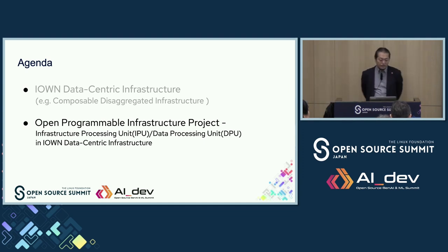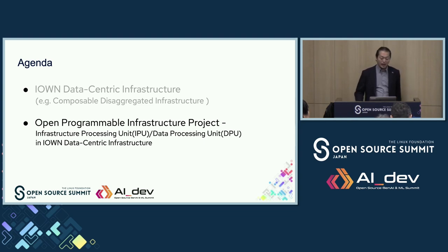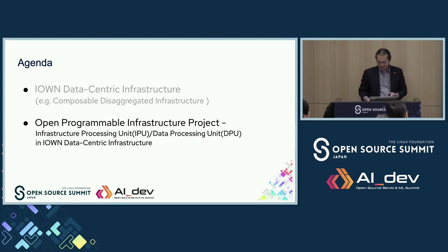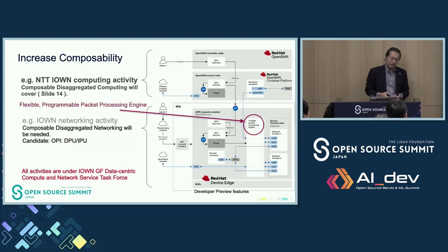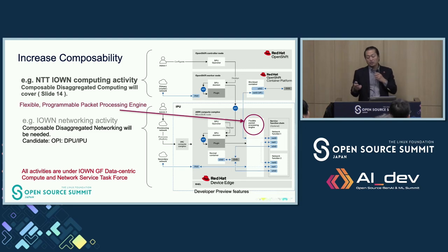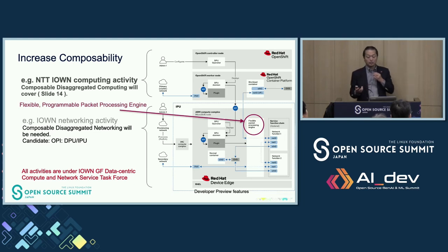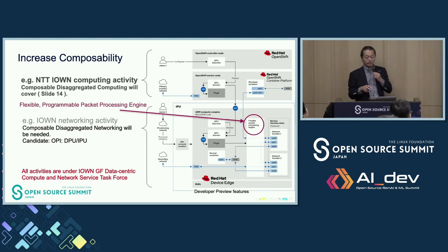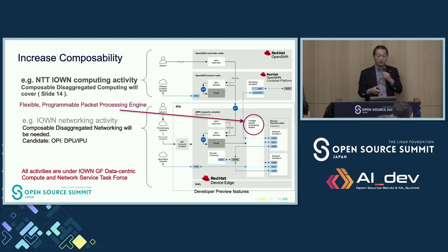Let's dive into our next topic: the DPU and IPU open-program infrastructure within the IWON data-centric model. Kanda-san covered composability within the OpenShift host Kubernetes cluster, which sits in the IWON computing layer. By implementing the DPU and IPU through the open-program infrastructure with OPI in the data-centric model, we can enhance composability for cloud-native applications. This is done by offloading network functions onto the DPU and IPU, decoupling the network management from the IWON computing layer.